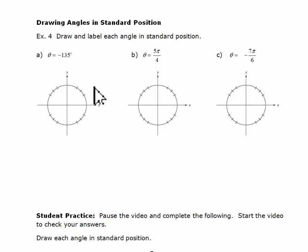The first angle is negative 135 degrees. I know that these are increments of 45 degrees. So here would be one 45, another 45, and then a third 45. From here to here would bring me to negative 90 degrees. I want to go another 45 degrees in the clockwise direction to give us negative 135, and that should go right through that line. Putting the arrow indicating the rotation is clockwise, this would be negative 135 degrees.